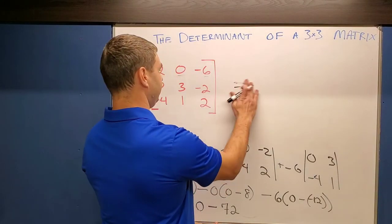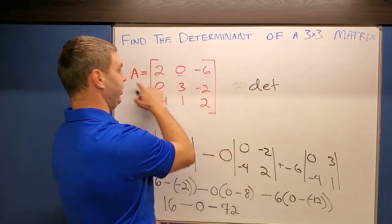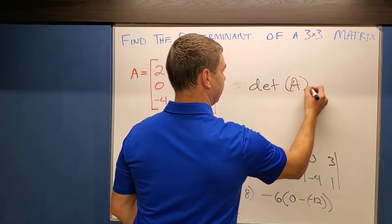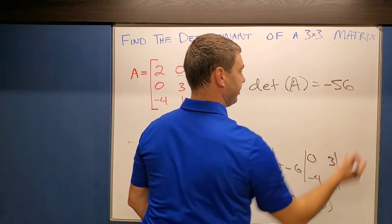So you can say the determinant, I'll write it like this. The determinant of matrix A equals negative 56.